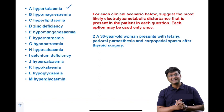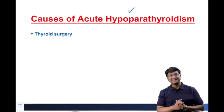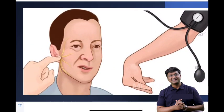The second clinical scenario is a 30-year-old man presenting with tetany, perioral paresthesia, and carpopedal spasm after thyroid surgery. This is suggestive of hypocalcemia. After thyroid surgery, there is a high chance of accidental parathyroidectomy, which causes hypocalcemia. The clinical features include tetany, perioral paresthesia, and carpopedal spasms.